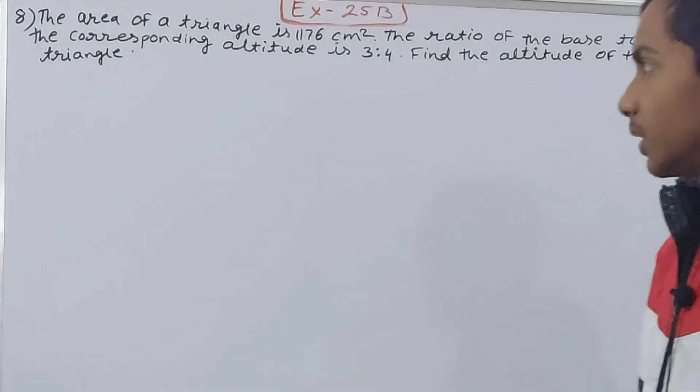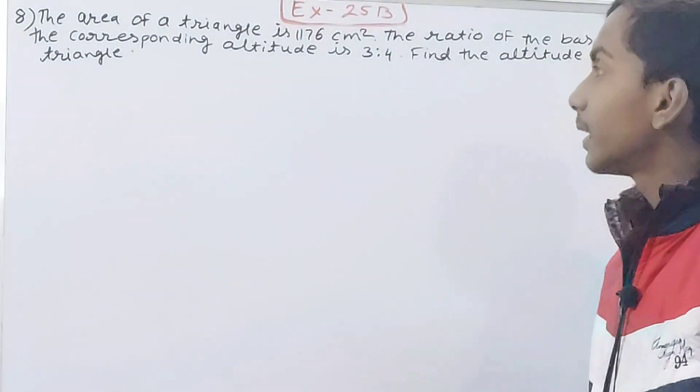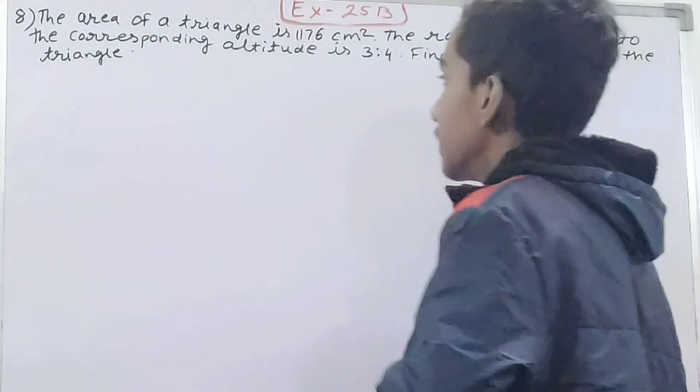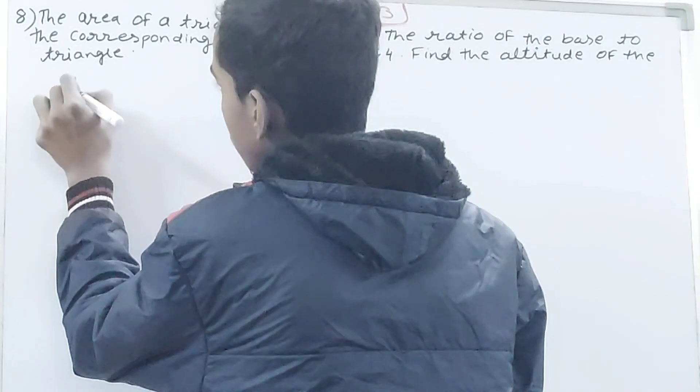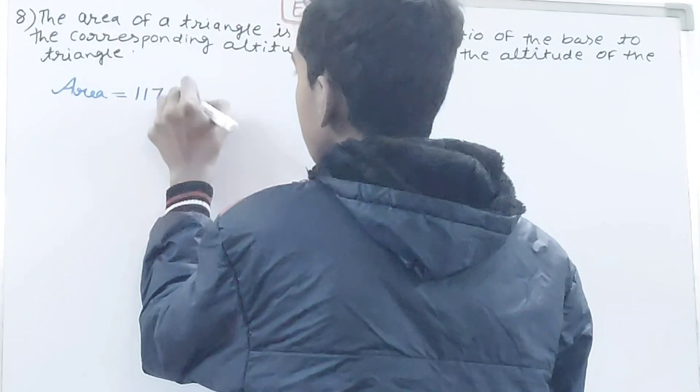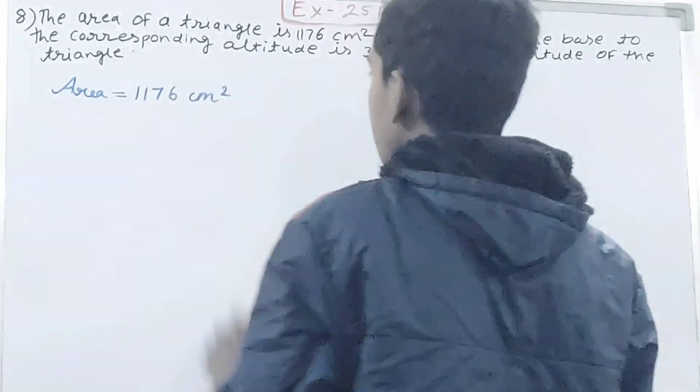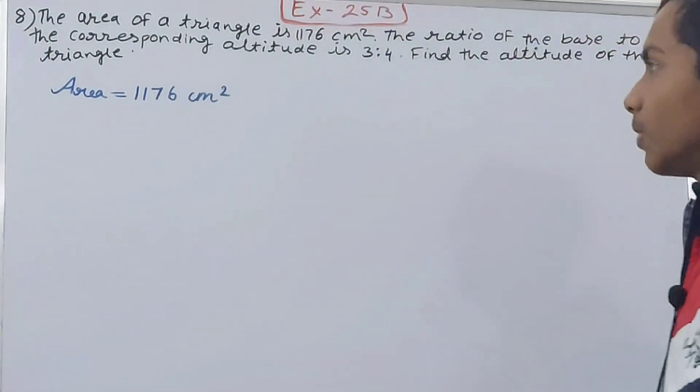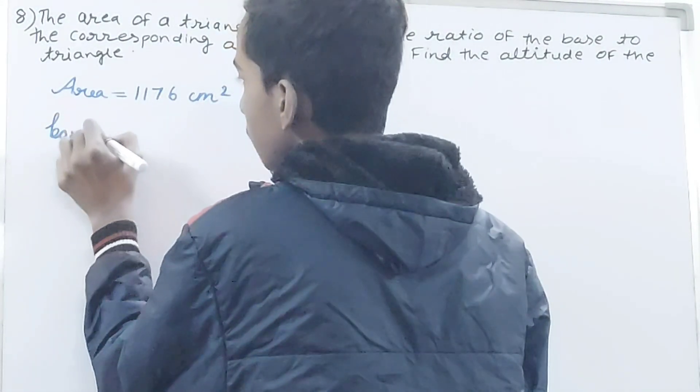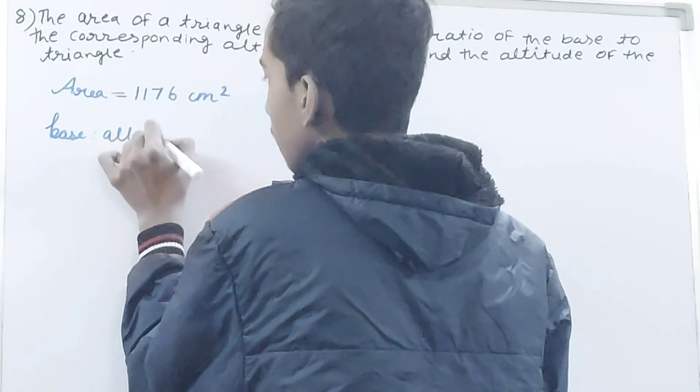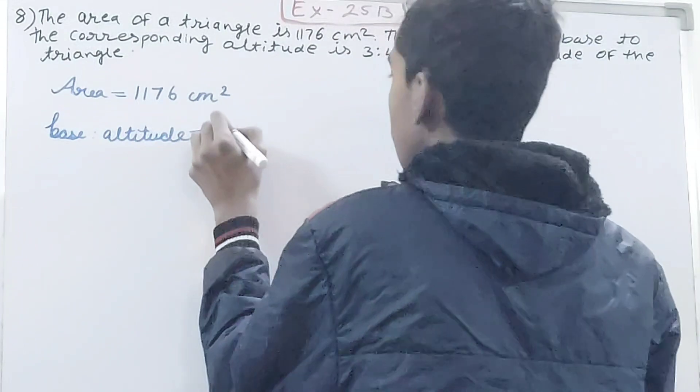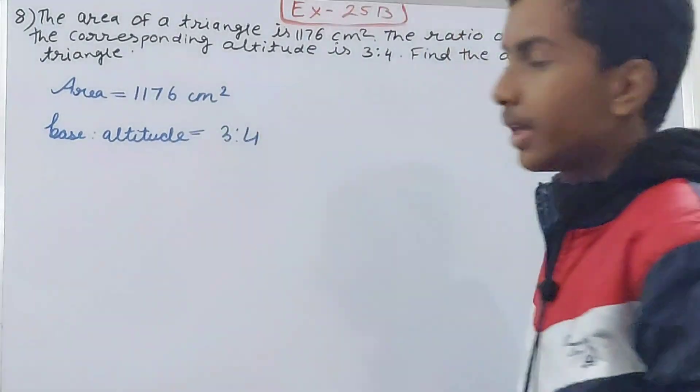altitude of the triangle. So this is what it says here: the area of a triangle is 1176 square centimeters. The ratio of the base to the altitude is 3 is to 4. Then find the altitude of the triangle.